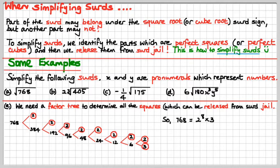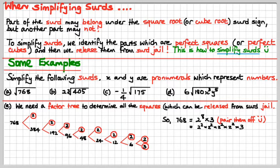If we multiply all those 2s and the 3 together, we'd get 768. There are 8 twos, so it's 2 to the 8 times 3. We're going to pair them off: 2 squared times 2 squared times 2 squared times 2 squared — that's 2, 4, 6, 8 all told — times 3.